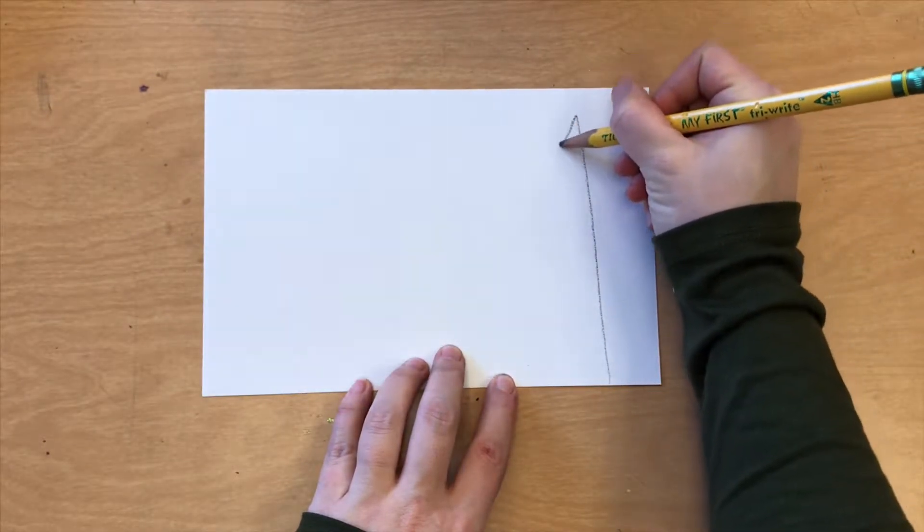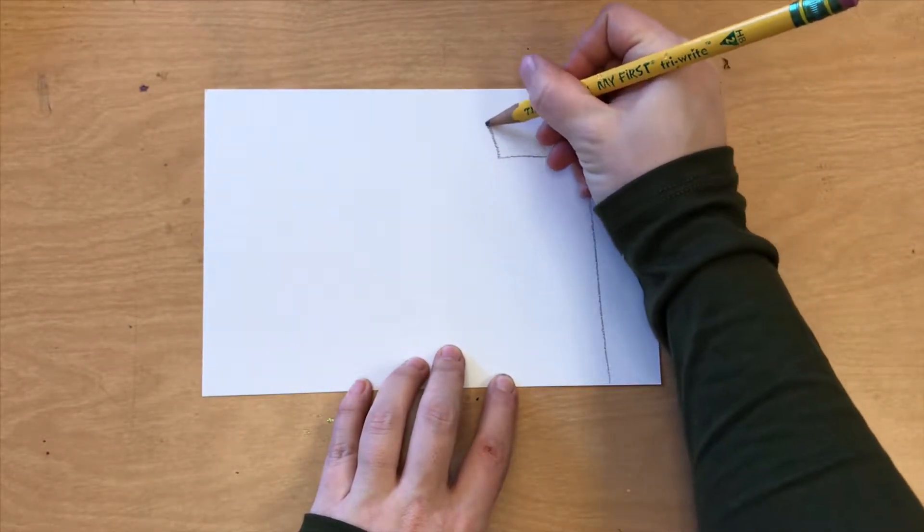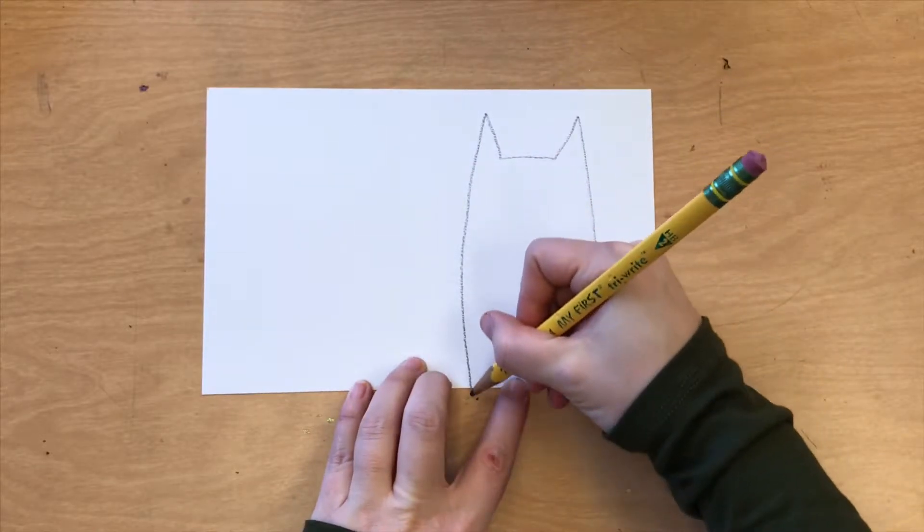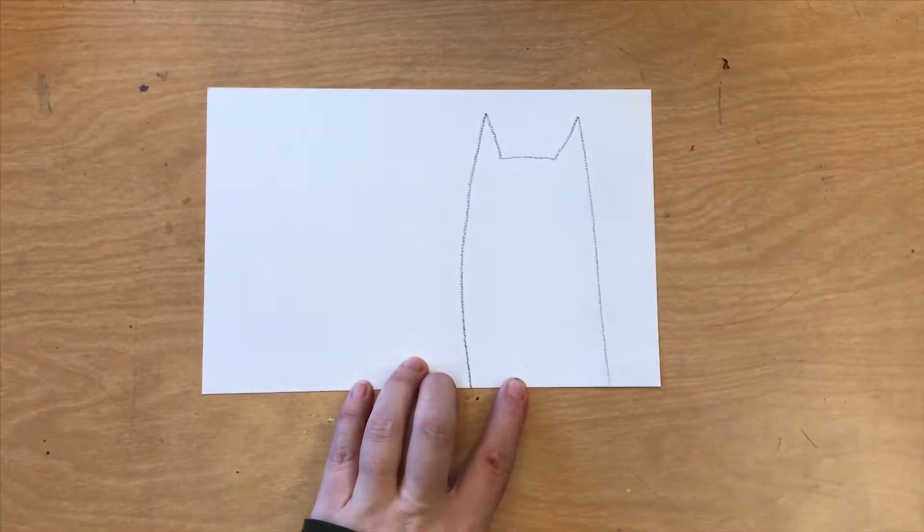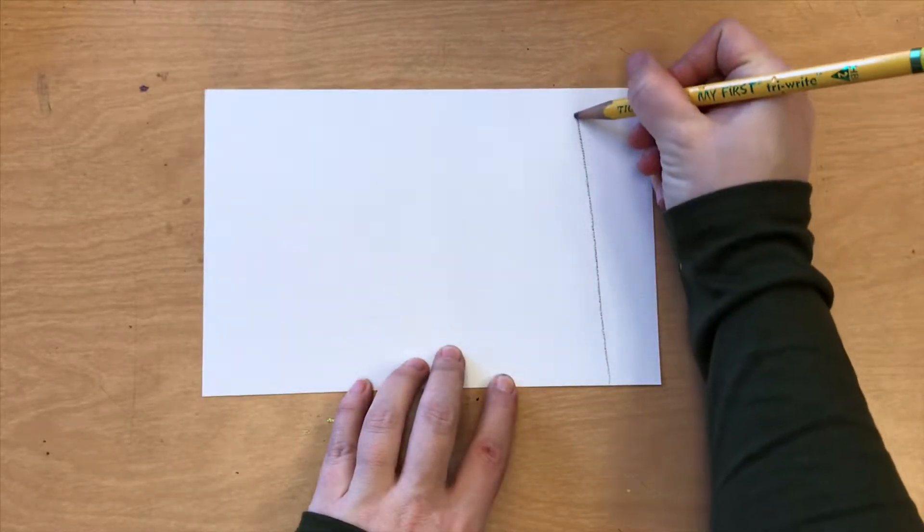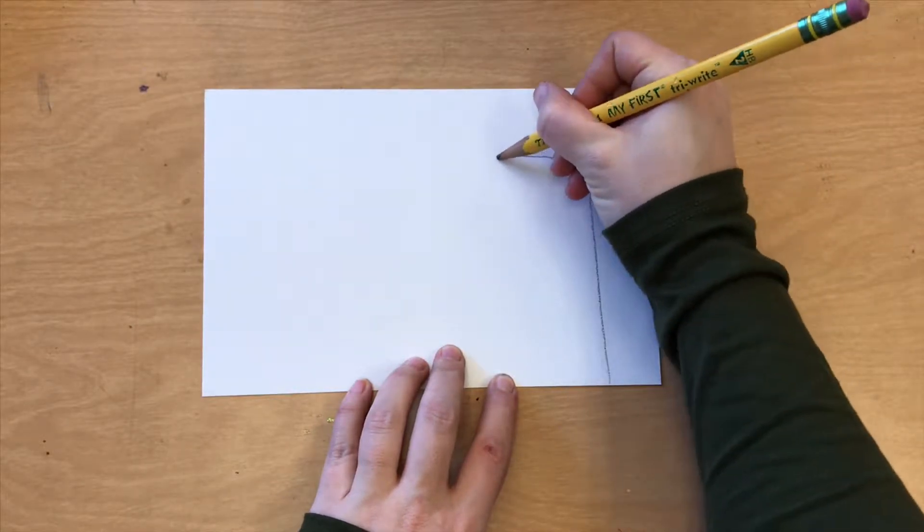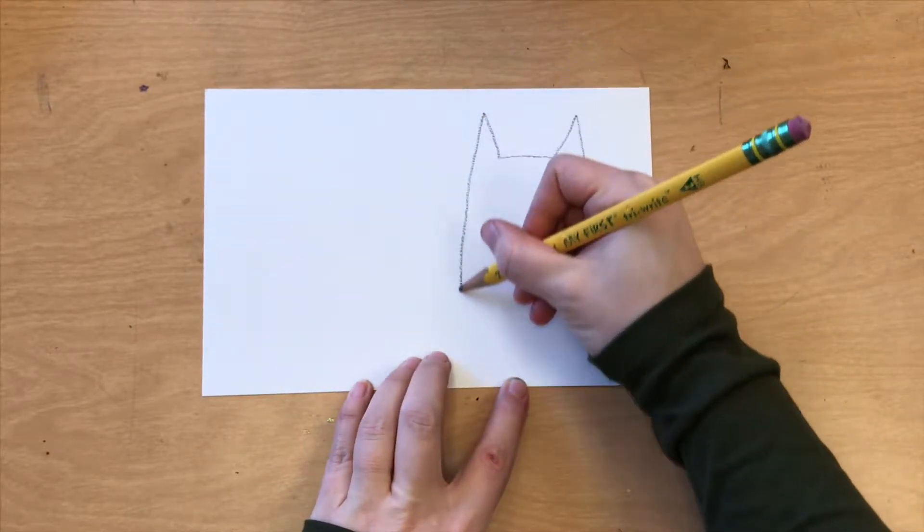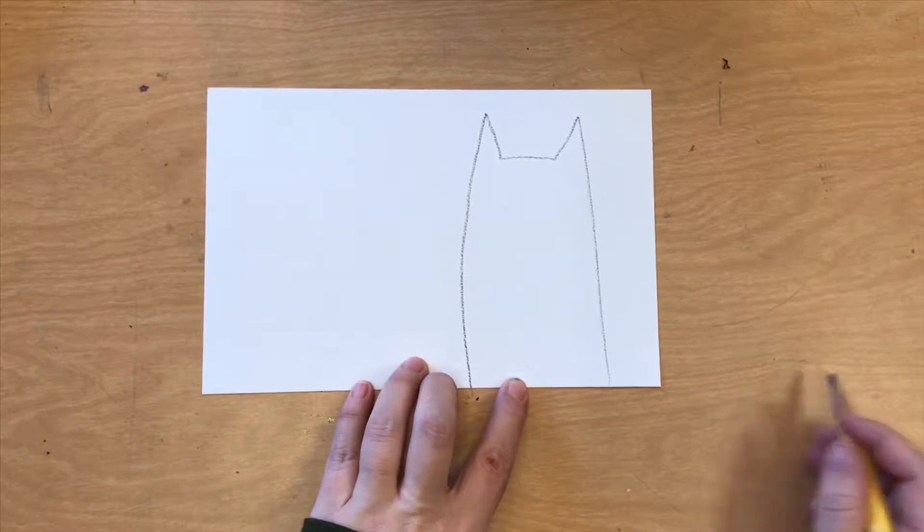All right. Start with one line that goes up, makes a point, and then comes down. Again, that's a line up from the bottom, up and down, across, up and down for the kitty head.